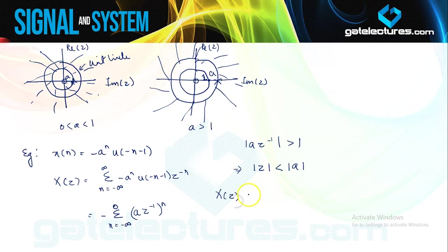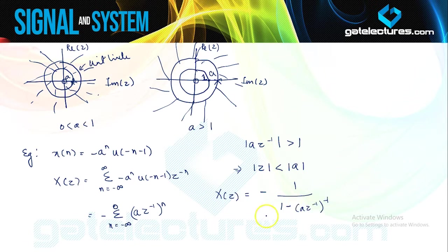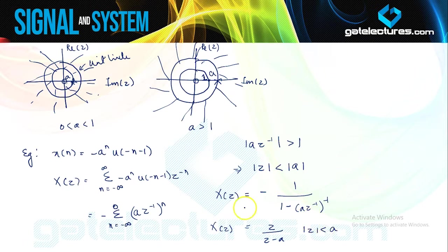Using the GP formula (first term divided by 1 minus common ratio), and solving, we obtain X(Z) equals Z divided by (Z minus a), with ROC: |Z| < |a|. Similar to Laplace transform, you can see that a left-handed signal and a right-handed signal can have the same expression for Z-transform. The only difference is in the ROC for these systems — only the ROC differs.